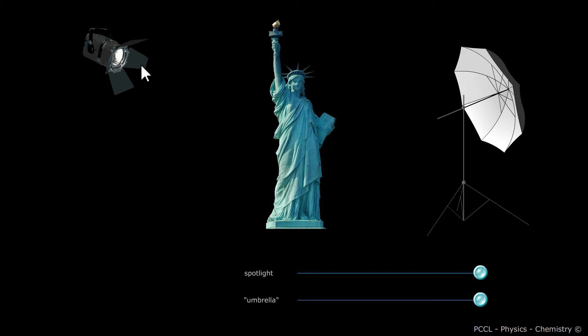The lamp is a primary light source — that is to say, it produces light. The umbrella only diffuses the light from the lamp. It is a secondary light source.